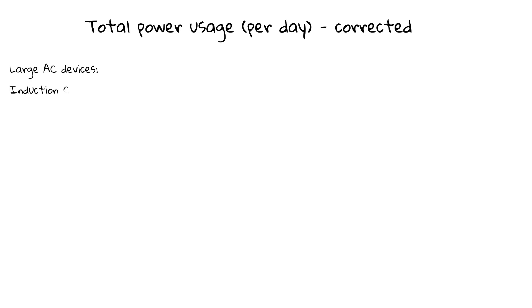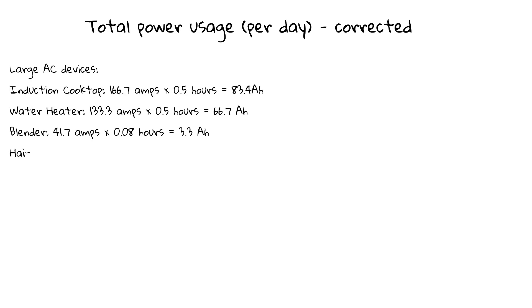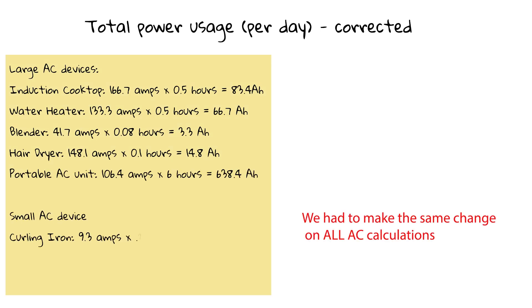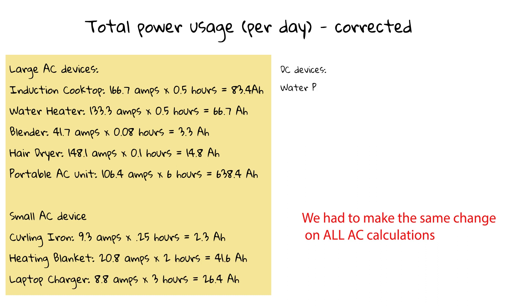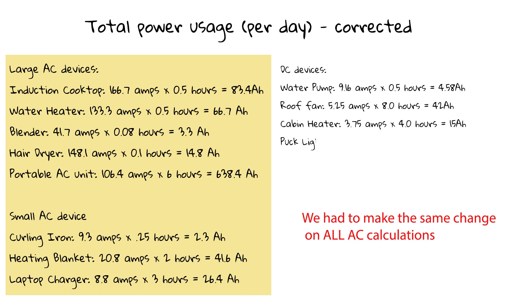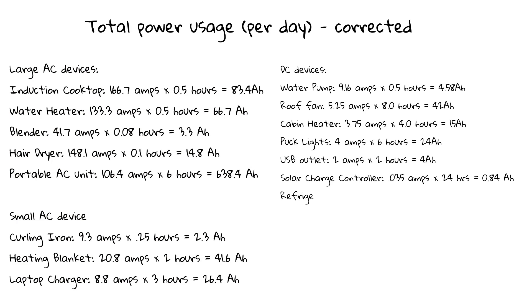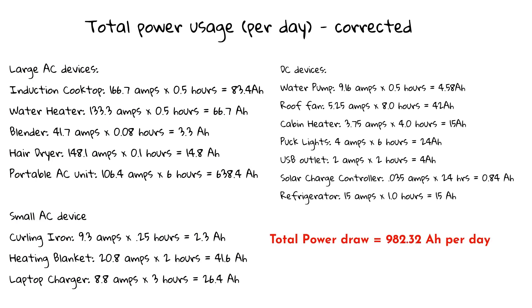So now if we look at the total power usage per day taking into account this new calculation, we don't have 193.11 amp hours any longer. Now we have a whopping 982.32 amp hours per day, which totally blows away our batteries.